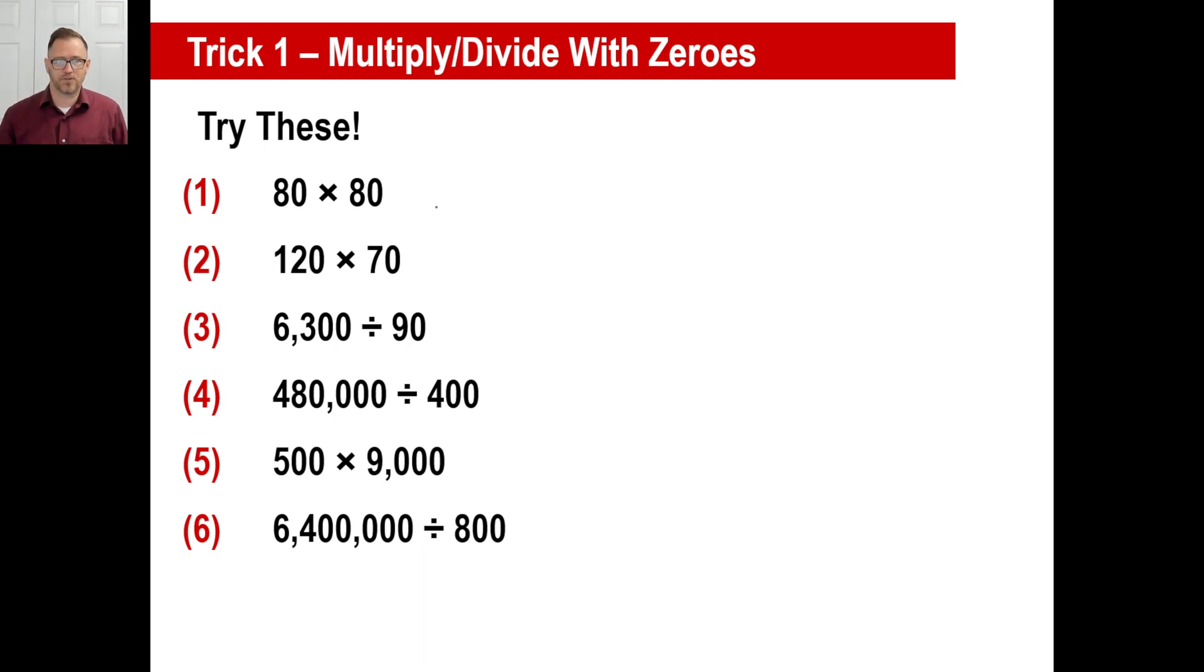Assuming you've unpaused here. Eight times eight is 64. One plus one zeros, two zeros. There we go. This one, 12 times seven is 84. Zero plus a zero are two zeros. This is a division, so we're subtracting one zero from that two zeros. So that's going to be one zero here. 63 divided by nine is seven.